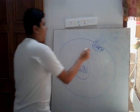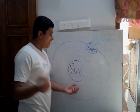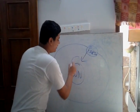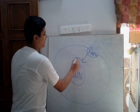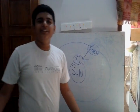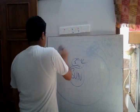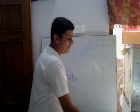Earth revolves around the Sun due to gravity, but why doesn't it collapse towards the Sun — why doesn't it fall into the Sun? This is the question, and I'm going to give you an answer using a model.